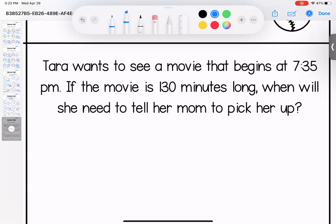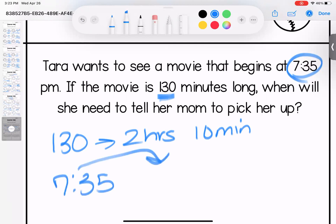Tara wants to see a movie that begins at 7:35 PM. If the movie is 130 minutes long, when will she need to tell her mom to pick her up? Well first, 130 minutes, that is two hours and 10 minutes because there's 60 minutes in an hour. If it starts at 7:35, we jump forward two hours, which is 9:35. 10 more minutes is 9:45.